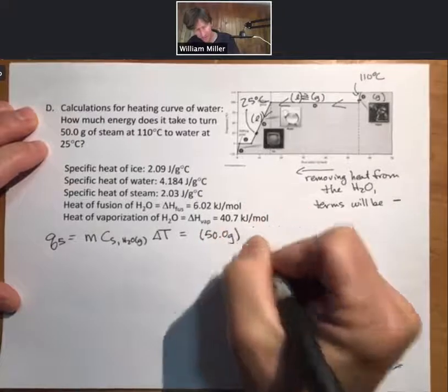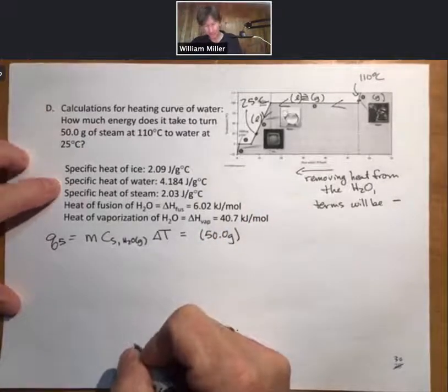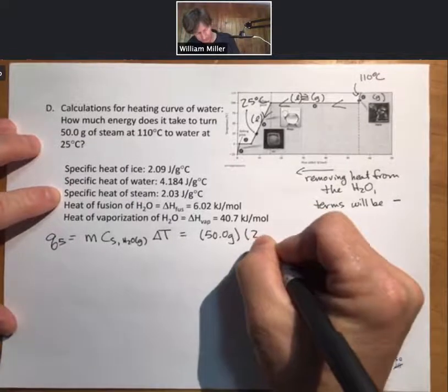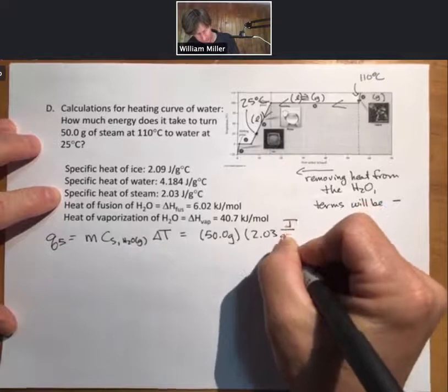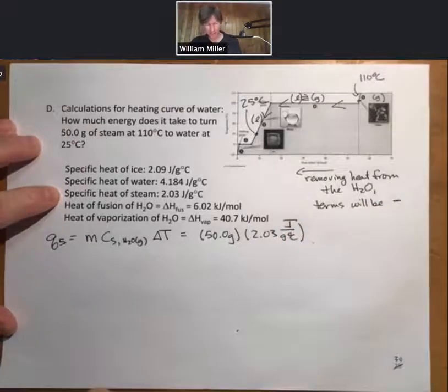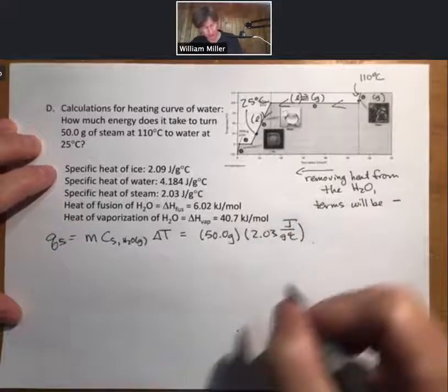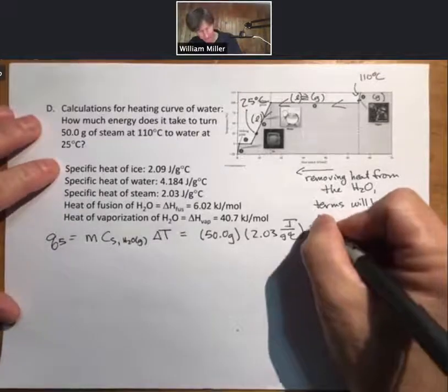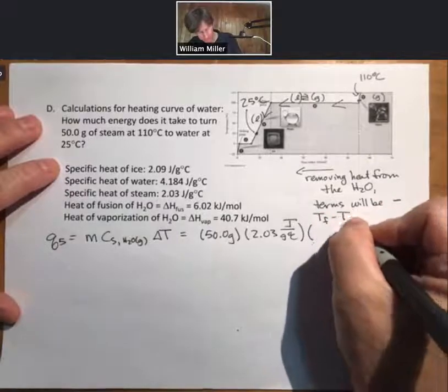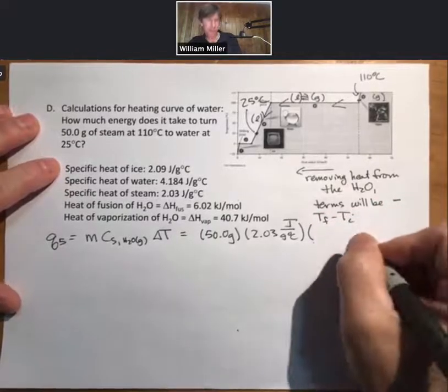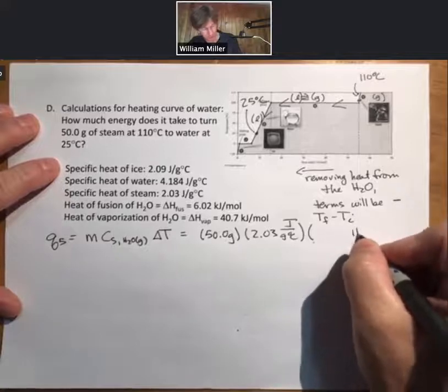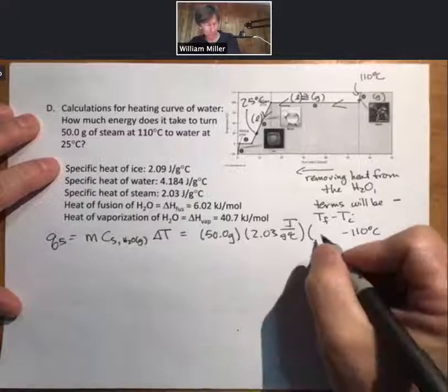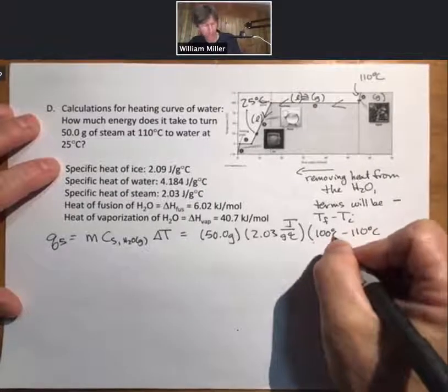Because the temperature is changing for this one, I have my mass, which is going to be 50 grams, 50.0 grams of steam. My specific heat of steam is 2.03 joules per gram degree Celsius. And my temperature change, well, temperature changes are always T final minus T initial.